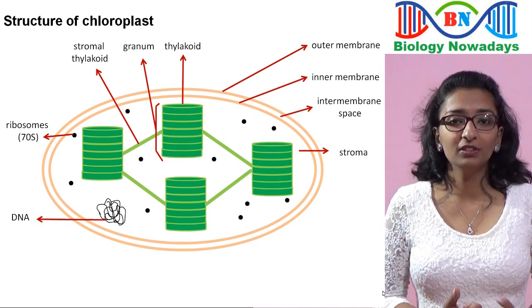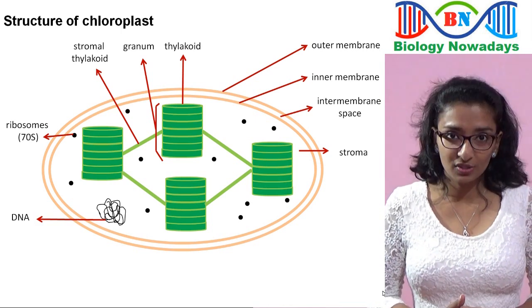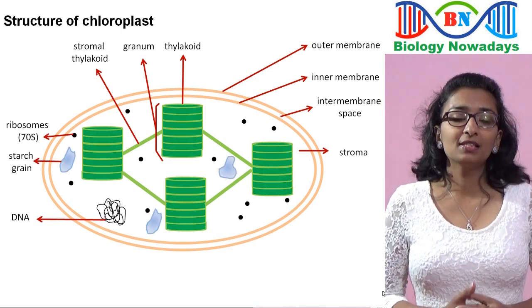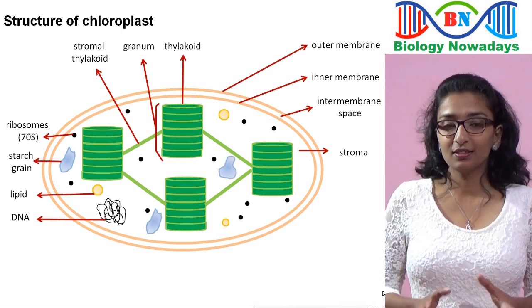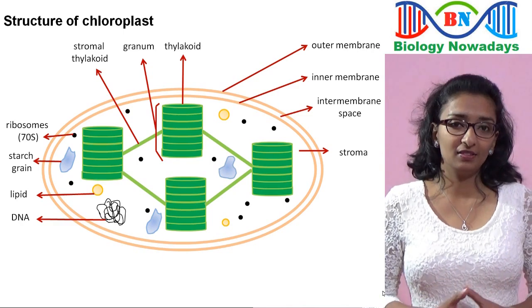Chloroplasts often contain starch grains and small lipid droplets, which are the reserve food materials.